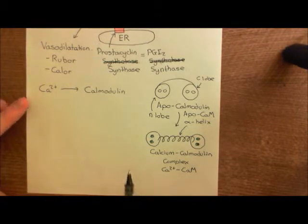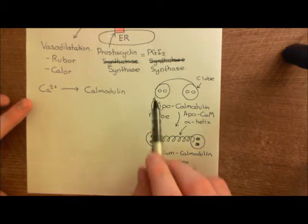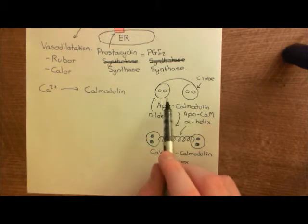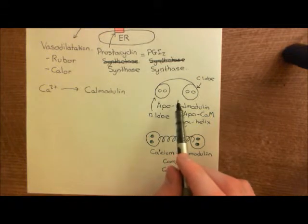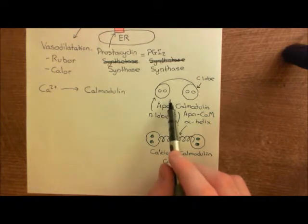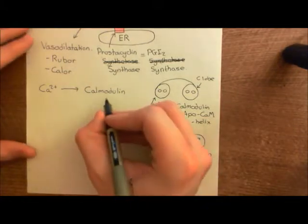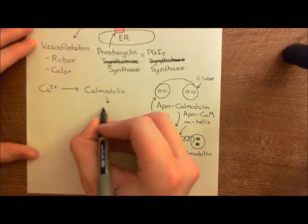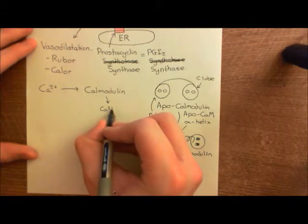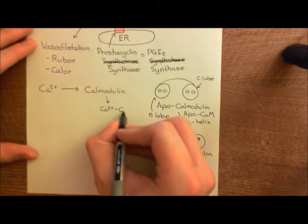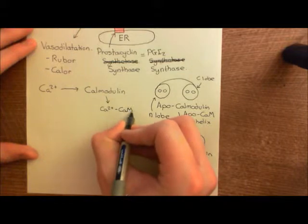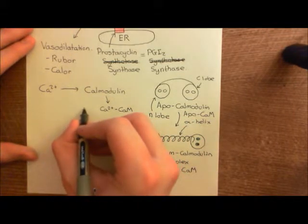When the calcium goes up in the cytoplasm of the cell, you're going to get four calcium ions binding to apo-calmodulin proteins, which are within the cytoplasm of the endothelial cell. And this will convert the apo-calmodulin into calcium-calmodulin complexes. So we're going to get lots of calcium-calmodulin complexes being formed. Now these are actually going to activate two important players. So we'll look at the first one initially.